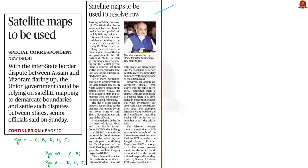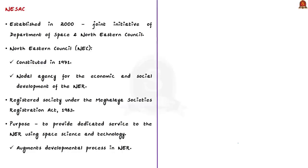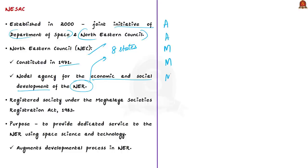Our next discussion is about the ongoing border dispute between Assam and Mizoram. As a solution, the union government is planning to rely on satellite mapping to demarcate boundaries and settle border disputes between states. This method is believed to provide a scientific approach for border demarcation with little scope for discrepancy. This task has been assigned to the Northeastern Space Application Centre (NESAC). NESAC was established in the year 2000 as a joint initiative of the Department of Space and the Northeastern Council, which was itself constituted in 1971 as the nodal agency for economic and social development of the eight northeastern states: Arunachal Pradesh, Assam, Manipur, Meghalaya, Mizoram, Nagaland, Sikkim and Tripura.